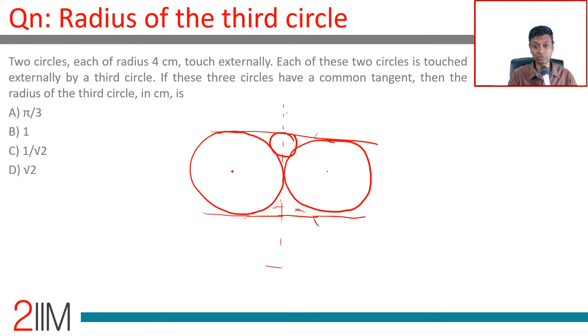Draw the center of this circle, center of this circle, center of this circle. Join these two. Four plus four - let's call this A, B, C. This is 4, this is 4.